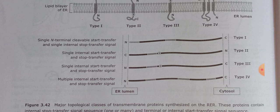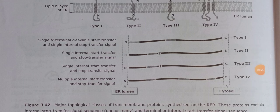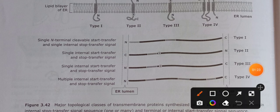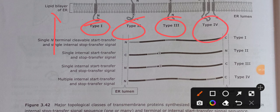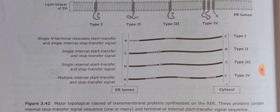In today's video we will talk about four types of integral proteins present in the lipid bilayer of the ER: Type 1, Type 2, Type 3, and Type 4 proteins. Along with that we will discuss one extra type — the lipid-anchored or GPI-linked protein.